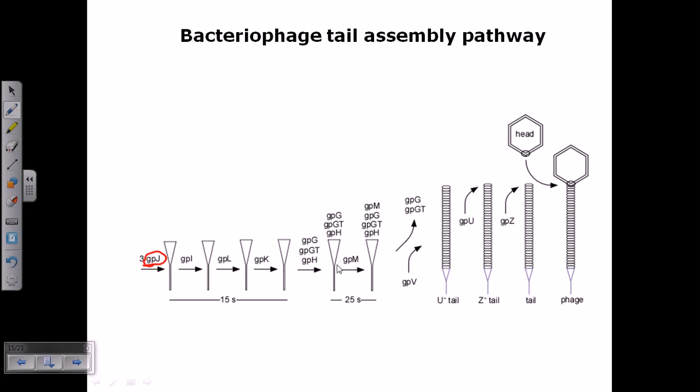These proteins start to arrange together to finally make a kind of tail structure. It is first called the u minus tail. Then they add gpu protein, which is important, and after adding the gpu protein they produce the tail called z minus tail.